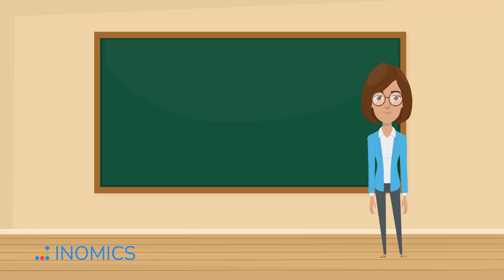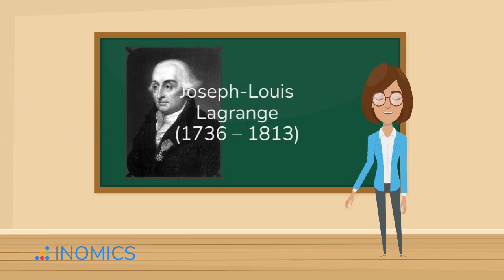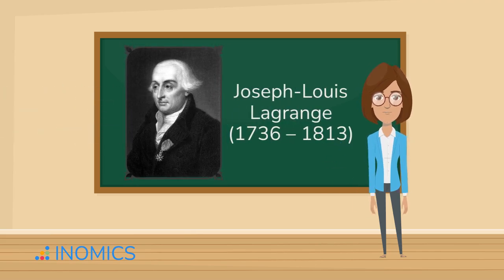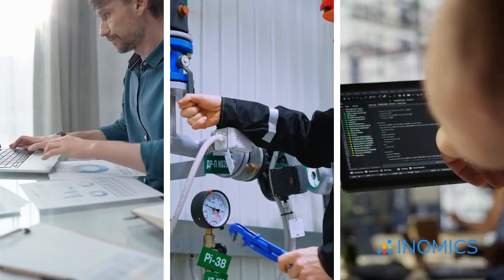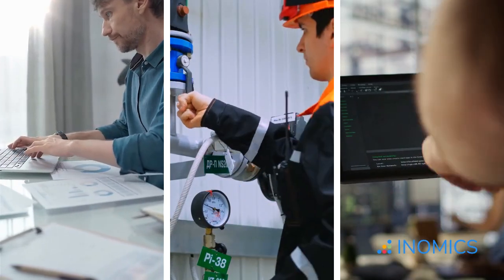At its core, Lagrangian Optimization is a method for solving problems with constraints. Named after the 18th-century mathematician Joseph-Louis Lagrange, this technique is widely used in economics, engineering, and even machine learning.